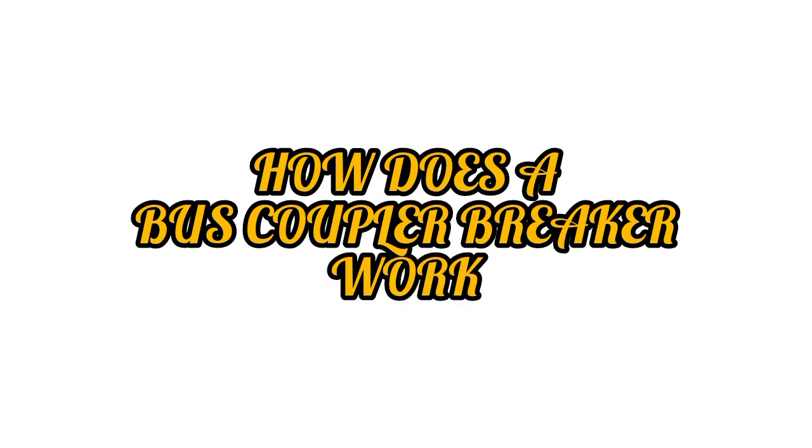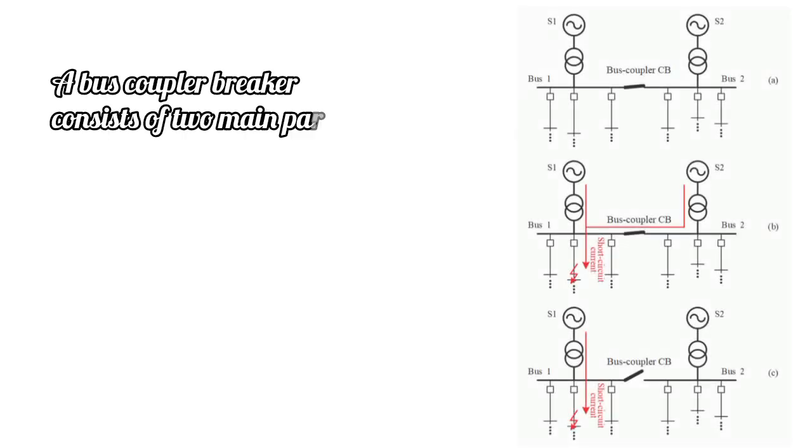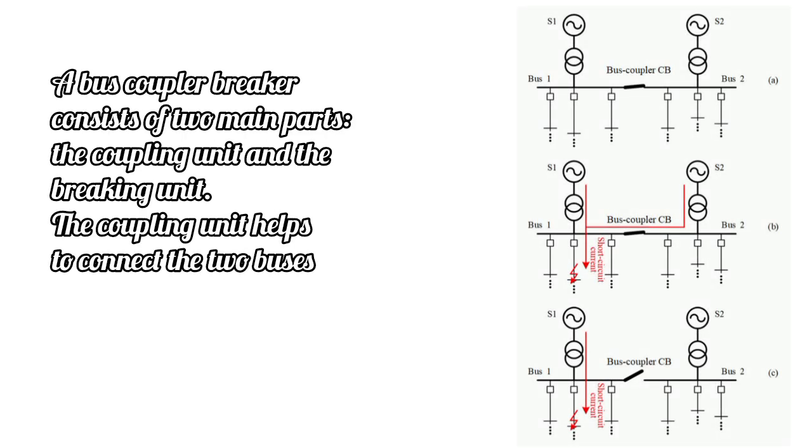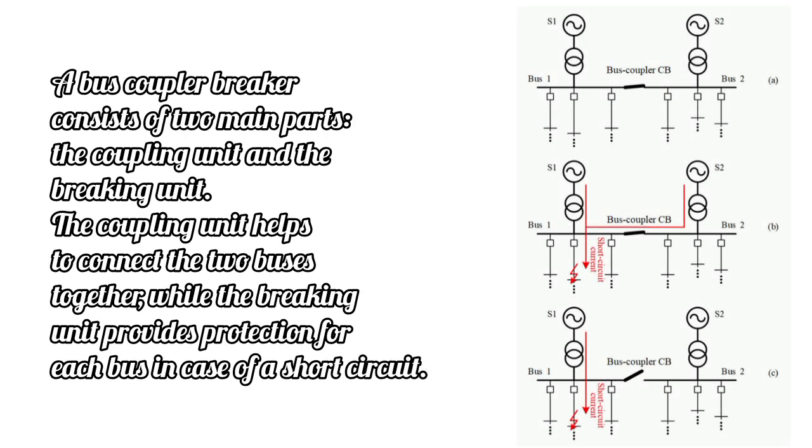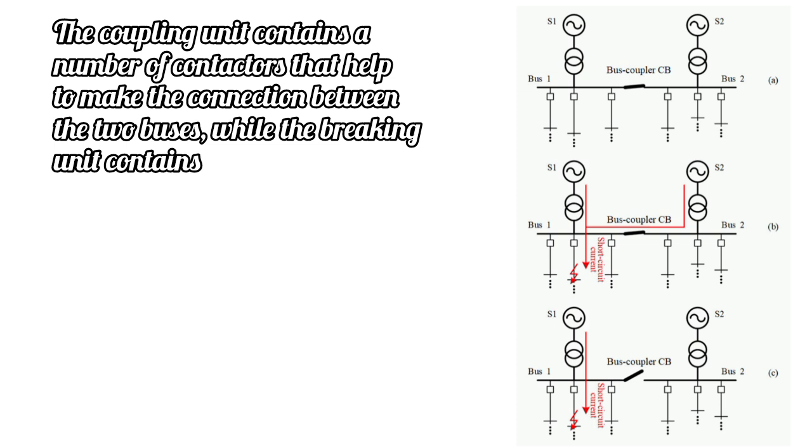How does a bus coupler breaker work? A bus coupler breaker consists of two main parts: the coupling unit and the braking unit. The coupling unit helps to connect the two buses together, while the braking unit provides protection for each bus in case of a short circuit.